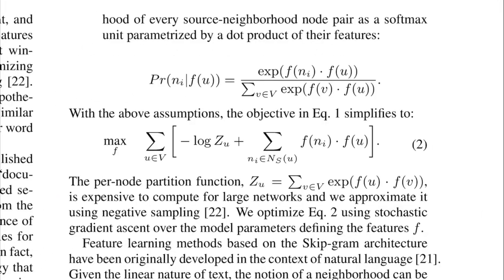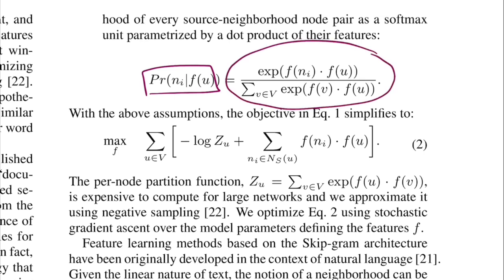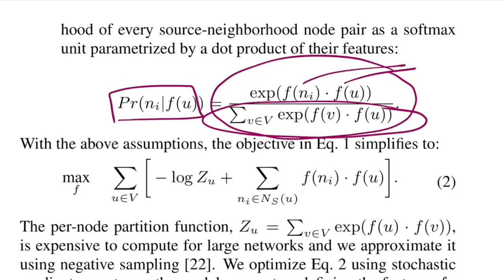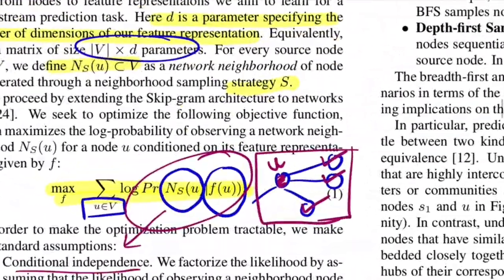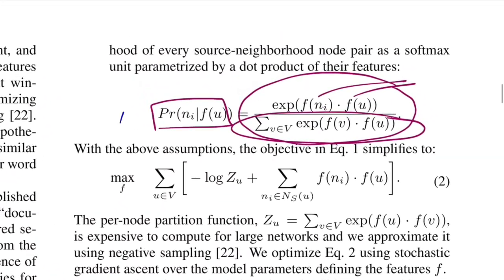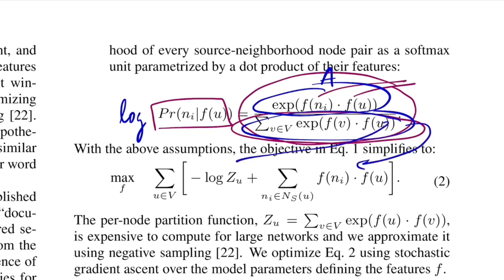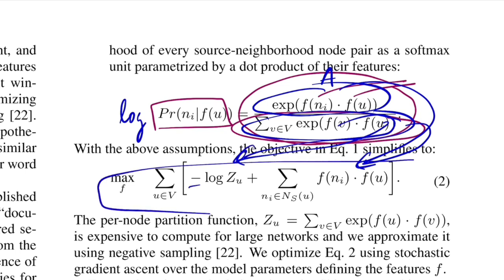The probability of observing neighbor N_i given feature representation F(U) is given by the softmax function: the dot product of the neighbor and central node — measuring similarity — normalized over all nodes in the network. Plugging this into the log likelihood equation, you get log(A) minus log(B), where A is the dot product term and B is the normalization term with a negative sign. This is the objective you want to maximize.